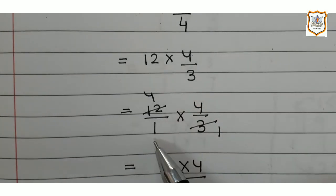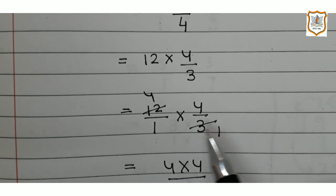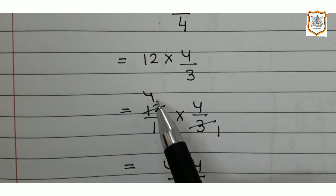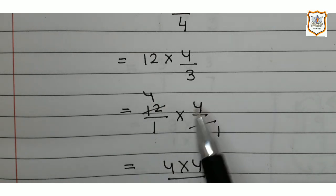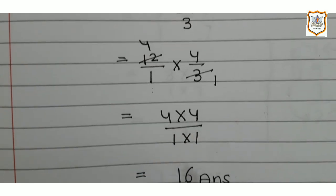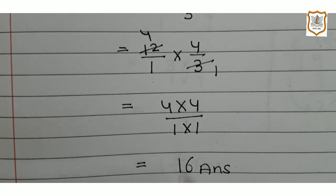We write 12 upon 1 multiplied by 4 upon 3. 3 ones are 3, 3 fours are 12. So 4 into 4 upon 1 into 1 — that is 4 into 4 upon 1 into 1. 4 fours are 16, and 1 ones are 1. So our answer will be 16. We can say that the answer of the first part of question number 1 is 16.